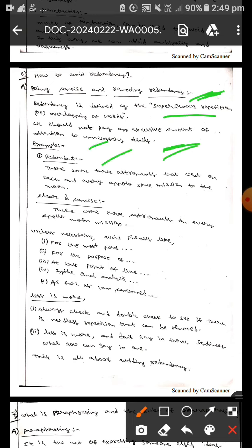Example, redundant. Redundant means there is a sentence like there were three astronauts that went on each and every Apollo space mission to the moon.